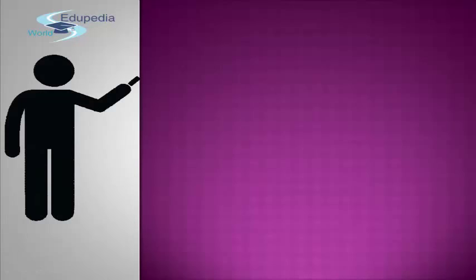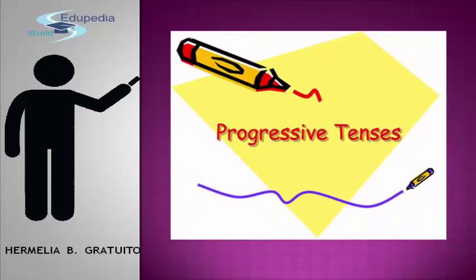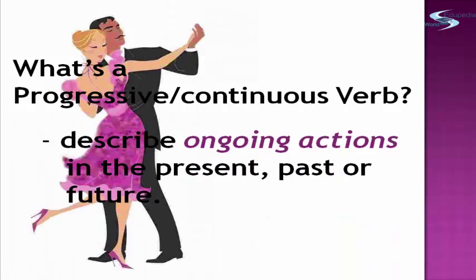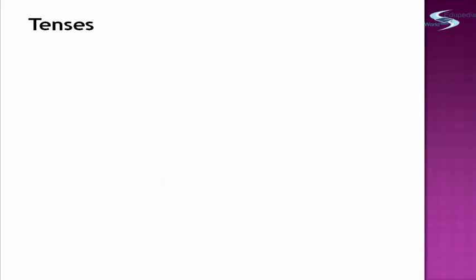Hi, this is Hermilia B. Gratuito. Our lesson this time is all about progressive tenses, or we can also call them continuous tenses. What's a progressive or continuous verb? It is used to describe ongoing actions in the present, past, or future. Remember that we have three tenses of the verb: the past, the present, and the future. This time, we will be studying all about these tenses of verbs in the progressive or continuous tenses.